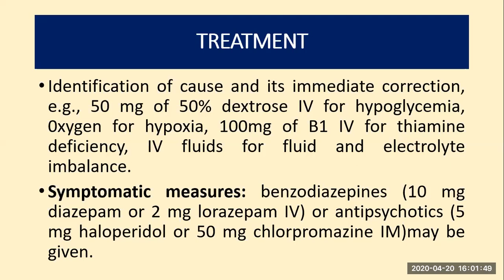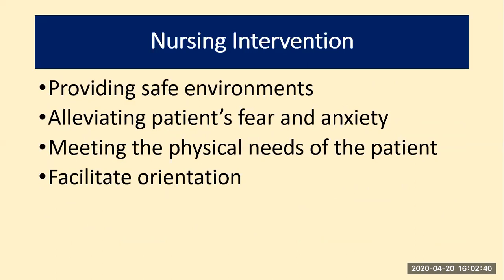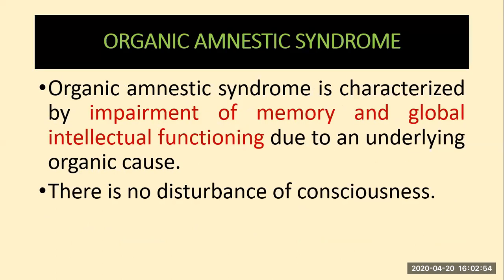Treatment requires identification of the cause, and the treatment differs as per the cause. Immediate correction is required — for example, if the patient is suffering with hypoglycemia, 50% dextrose should be given; 100 ml of IV thiamine for thiamine deficiency; IV fluids for fluid and electrolyte imbalance. Symptomatic measures to treat delirium include benzodiazepines or antipsychotic medications — chlorpromazine or haloperidol, or benzodiazepines like lorazepam or diazepam — as per the doctor's order. Nursing interventions include providing safety and security, alleviating the patient's fear and anxiety, meeting physical needs, and facilitating orientation.